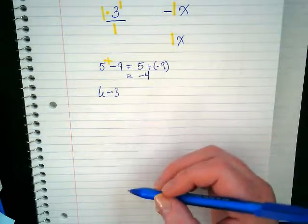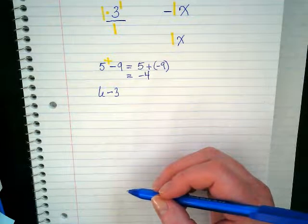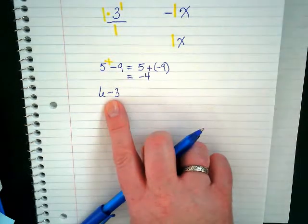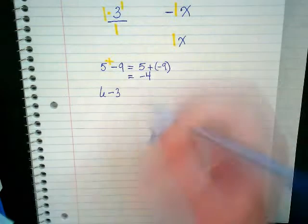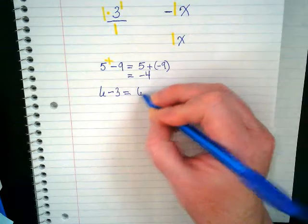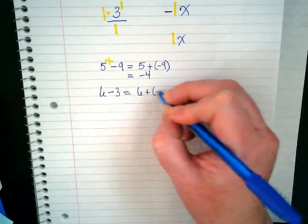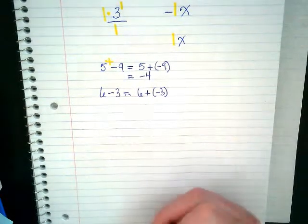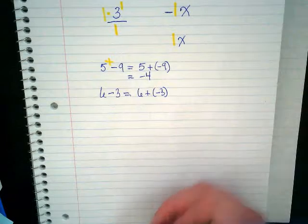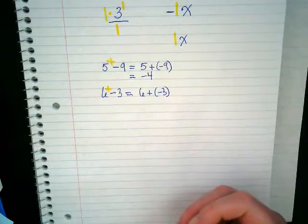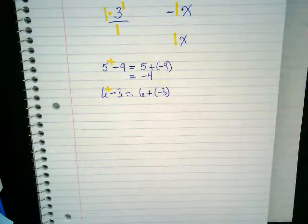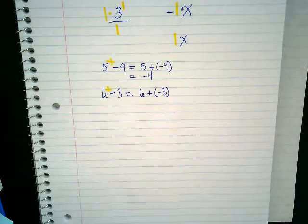Look at the number line - you're starting at six and going down three places. Let me rewrite this with the plus sign visible. This equals six plus negative three. It's the same thing. The plus sign was invisible but we have a six and a negative three, which means we're really putting them together.